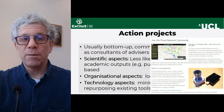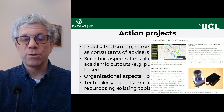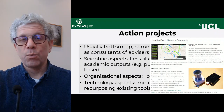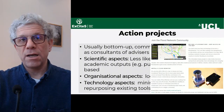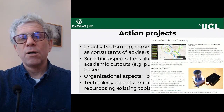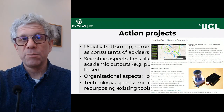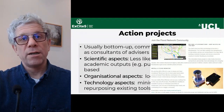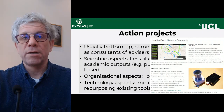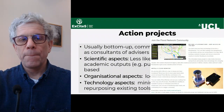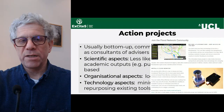An example is the flood monitoring network, where people install gauges at the end of their garden where a river or stream flows, helping to create a local network. It's bottom-up — participants coordinate and manage it all by themselves.